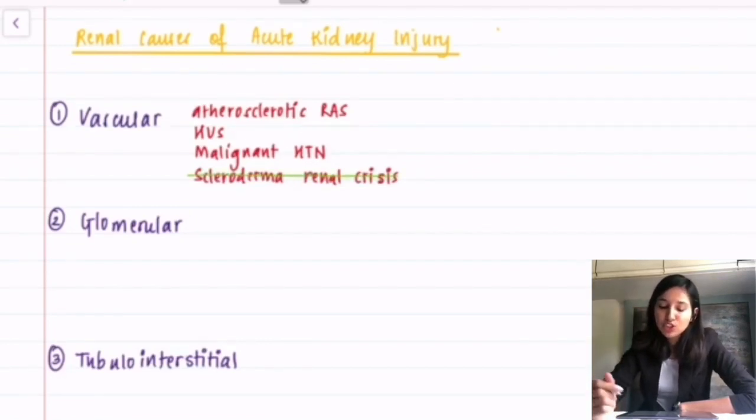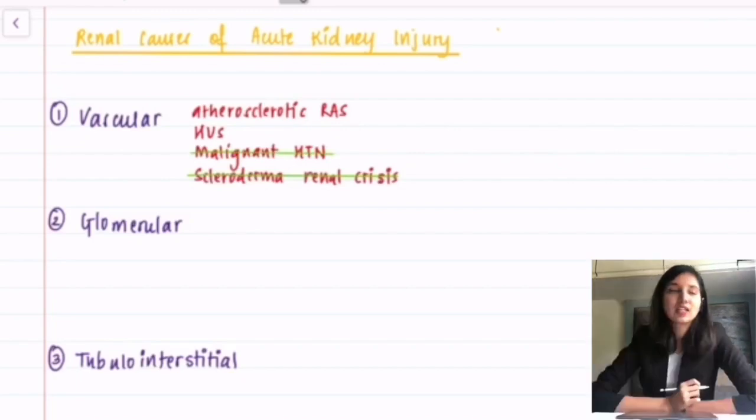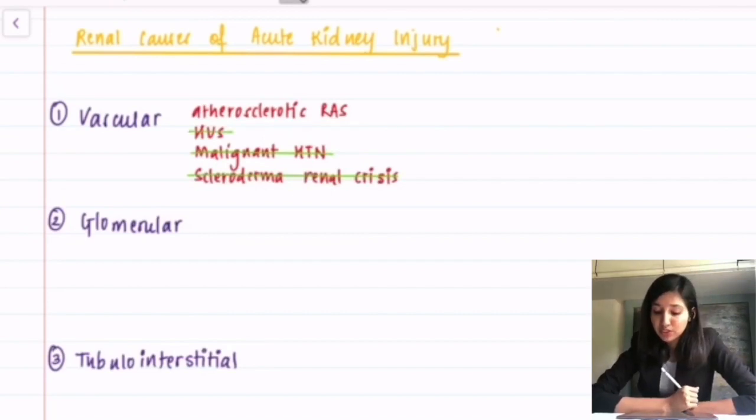Malignant hypertension usually presents with blood pressure above 200 over 140 and is defined with the presence of papilledema accompanied with retinal hemorrhages and exudates which again excludes that. HUS presents with the history of bloody diarrhea that is dysentery and it is commonly due to the infection of E. coli. There is absence of edema in atherosclerotic renal artery stenosis and there is intravascular volume overload. So, that excludes atherosclerotic RAS.